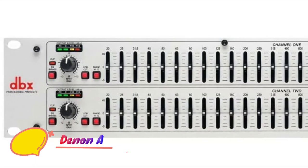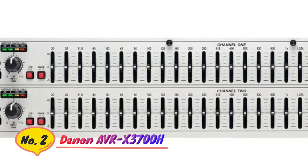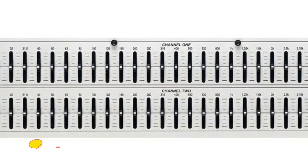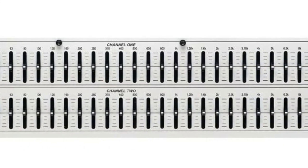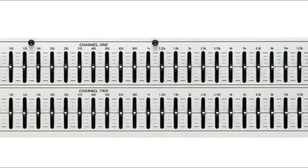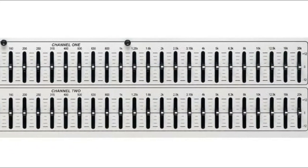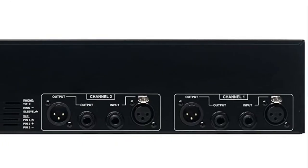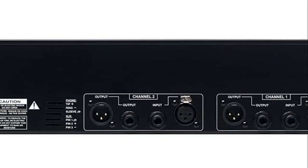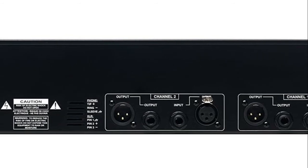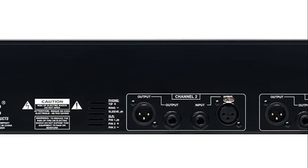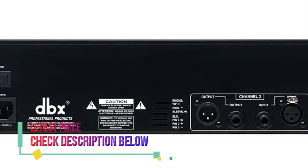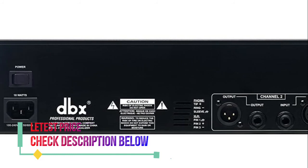Number 2: DBX. Dual 31 Band, 1/3 Octave Constant Q Frequency Bands. Switchable Boost/Cut Ranges of 6 or 12 dB. Front Panel Bypass Switch. 12 dB Input Gain Range. 4 Segment Lead Ladders for Monitoring Output Levels.